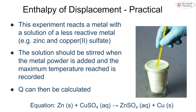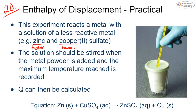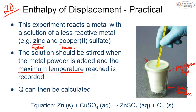The second practical is the enthalpy of displacement. We take a metal and add it to a solution of a less reactive metal salt. For example, zinc is higher on the reactivity series than copper, so zinc displaces the copper from copper sulphate solution. We stir the metal powder into the solution and wait until we reach a maximum temperature. We use a polystyrene cup inside a glass beaker — the cup keeps the heat in, the beaker prevents it tipping over — and a lid to retain heat.